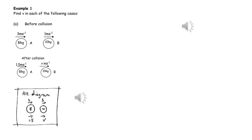Rather than drawing the two spheres before and after the collision, we can just do an alternative diagram, which is to draw the spheres once and put the velocities before the collision above the spheres and the velocities after the collision below the spheres.